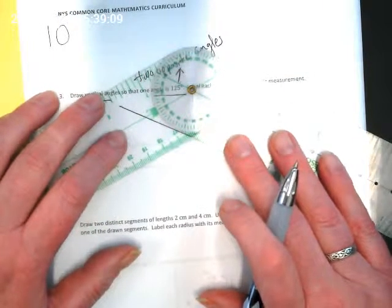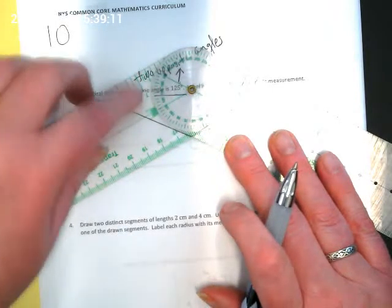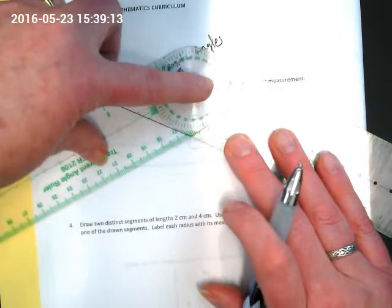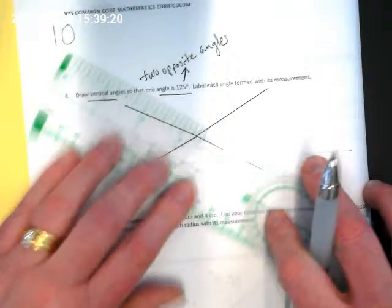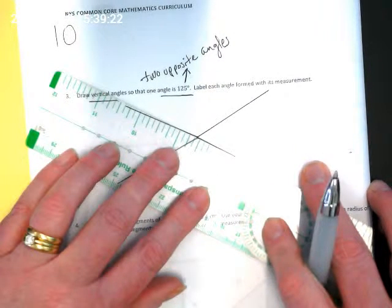I'm looking at the angle ruler, find where it says 120, right there. And 125 is going to be one more notch up. And if I draw that angle here, and then I keep this set to 125, I can turn it over.